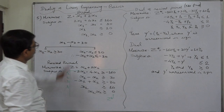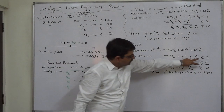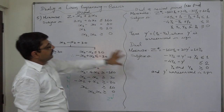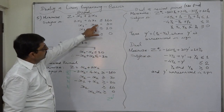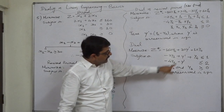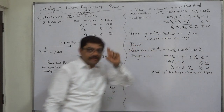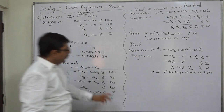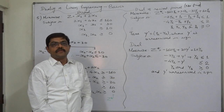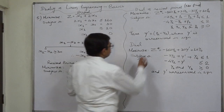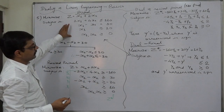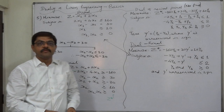Now verify: the original primal has two variables, and the final dual has two constraints. The original primal has three constraints, and the final dual has three variables (y1, y-dash, y4). The original primal has an equality at constraint number two, and the dual has an unrestricted variable at position two. All rules are satisfied — minimization versus maximization, right-hand side becoming objective coefficients. This is the final dual of the original primal. Thank you.